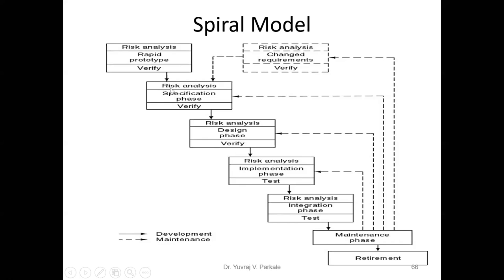In the spiral model, the regular phases — specification, design, implementation, integration, maintenance — remain the same as other models. The only change is that risk analysis is done in each phase: identifying adverse conditions that may appear during product design and preparing solutions beforehand. In all five phases, risk analysis is performed, meaning you have alternatives, different solutions, different problems anticipated, and probable solutions ready.